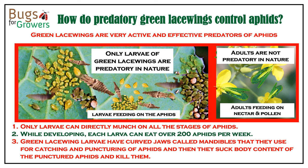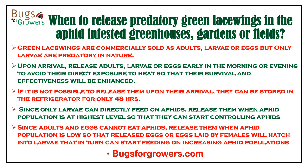Green lacewing larvae are predatory in nature and very active predators of aphids. When they come across an aphid colony, they will immediately start feeding on all the stages of aphids and eliminate their populations. Adults are not predatory in nature and can only feed on nectar and pollen. It is well-known that larvae can feed on over 200 aphids in a week. While feeding, larvae puncture the body of aphids with their mandibles and feed on the contents of the aphid body — that is how they control aphids.